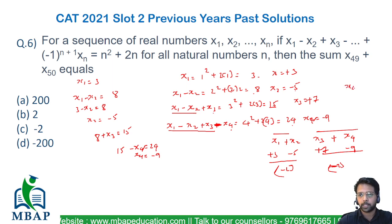So similarly x49 plus x50 will also give you minus 2 in the end and hence the answer for this given question will be equal to minus 2.